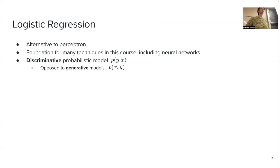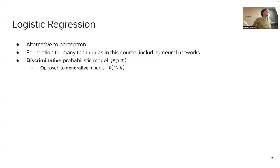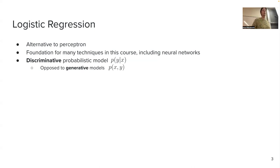We're going to talk more about tokenization, which was influential for our feature vector production. Logistic regression is an alternative to perceptron, and it's the foundation for many techniques in this course, including neural networks. In machine learning, there are two classes of models: discriminative models and generative models. This distinction is important — people will just say 'this is a discriminative model' assuming you know what that means.